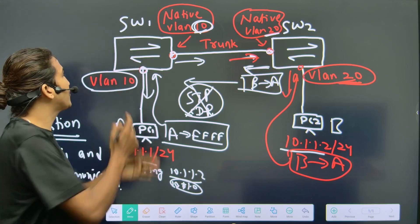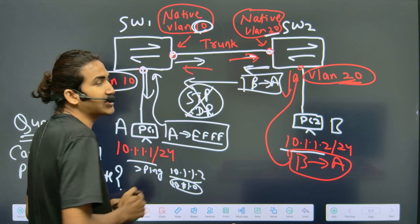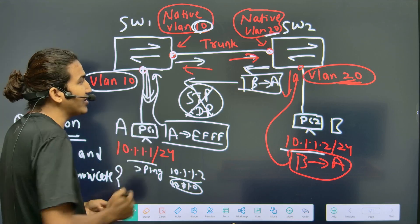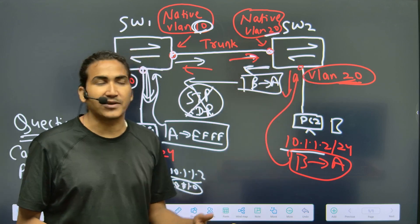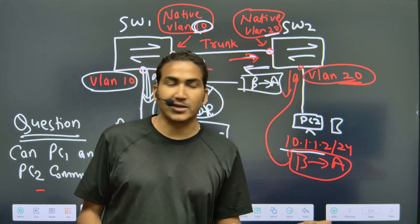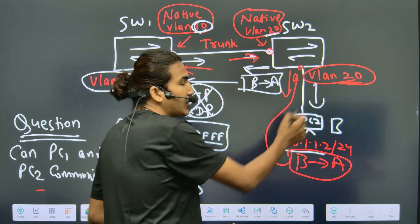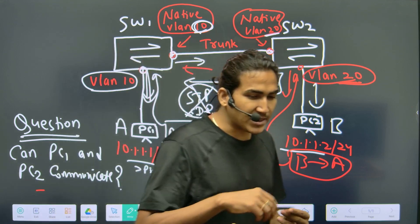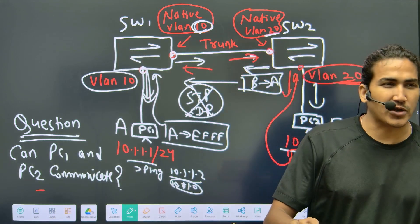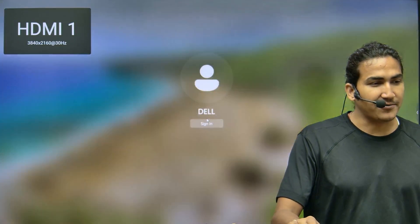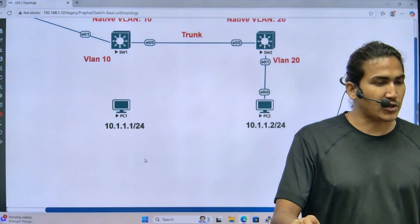Whenever Switch 1 receives untagged traffic on the trunk, it assigns it to VLAN 10 and forwards to PC1. Whenever Switch 2 receives untagged traffic, it assigns it to VLAN 20 and forwards to PC2. Both PCs communicate this way. On the trunk link, switches perform tagging except for the native VLAN. Note that ISL protocol does not support native VLAN — here we are using dot1q protocol.